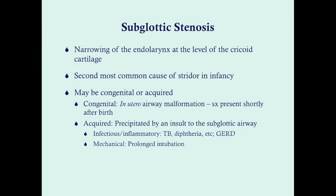Subglottic stenosis is a narrowing of the endolarynx at the level of the cricoid cartilage. It is the second most common cause of stridor in infancy — number one is laryngomalacia. It can be congenital, presenting shortly after birth as a true malformation, or acquired, precipitated by an insult to the subglottic airway. In the U.S., the most common cause of acquired subglottic stenosis is prolonged intubation, where tube irritation narrows the airway.